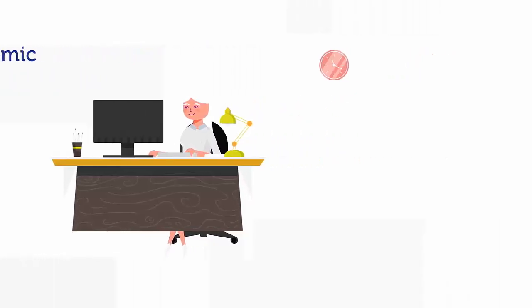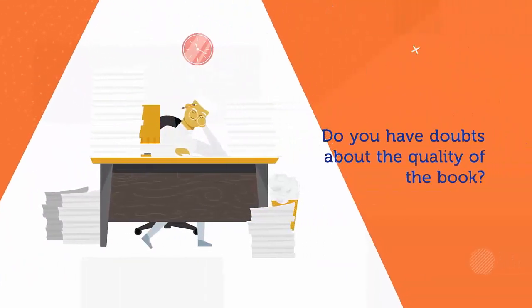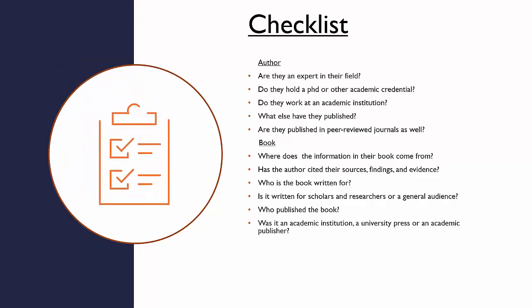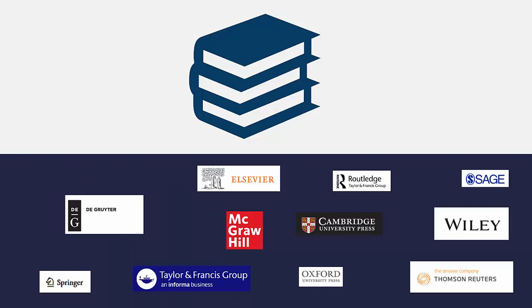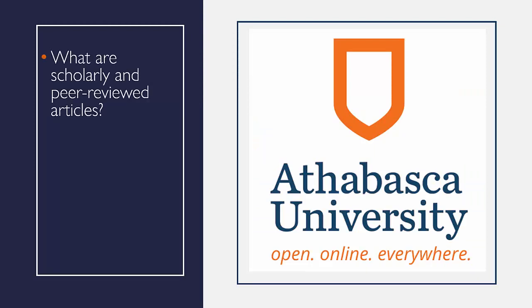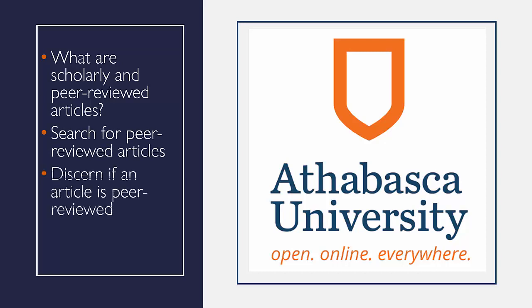If you have any doubts about the quality of a book that you are using for your research, please contact the library or your course instructor for more advice. Here's a checklist of questions to ask yourself. In regards to publishers, this list is not exhaustive, but these are some of the most well-known publishers of high-quality academic books. I hope this video has helped you to understand what scholarly and peer-reviewed articles are, how to search for them, how to discern if an article is peer-reviewed, and how to assess the reliability of books.